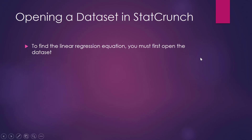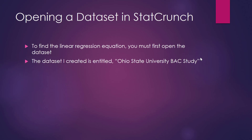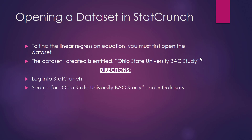To find the linear regression equation, you first have to open a dataset. The dataset I created is entitled 'Ohio State University BAC Study' — remember, BAC stands for Blood Alcohol Content. First, you have to log into StatCrunch. Then you will search for the dataset 'Ohio State University Blood Alcohol Content Study' under datasets. Once you open the dataset, you can find the linear regression equation. Let's jump to the internet so I can show you step-by-step how to complete this process.